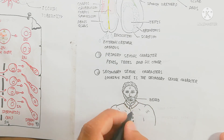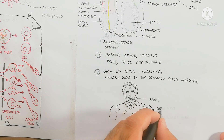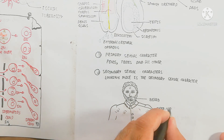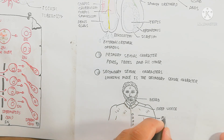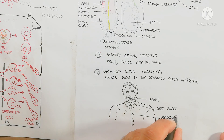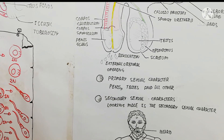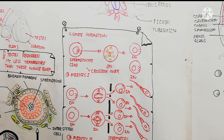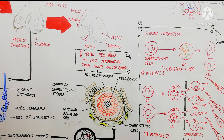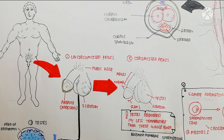One more important thing: the seminal vesicle, which is present with the ampulla of the ductus deferens, releases seminal fluid — 60% of semen — while 40% is sperm-containing fluid. I hope you understood this video. If you liked it, please make sure to give a thumbs up, share this video, and give suggestions for new videos on the male reproductive system.